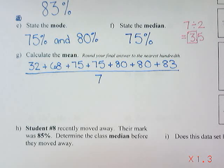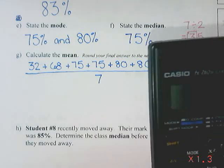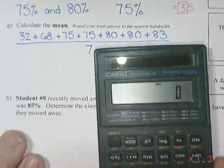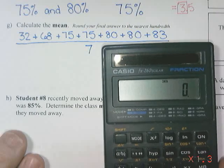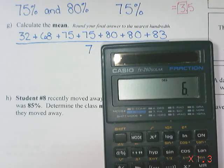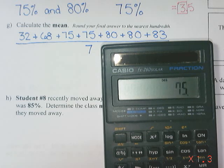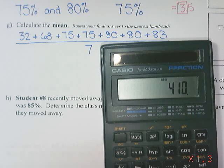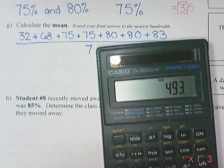I'm going to use a calculator for this part. I'll add these numbers together: 32 plus 68 plus 75 plus 75 plus 80 plus 80 plus 83, and I got 493.